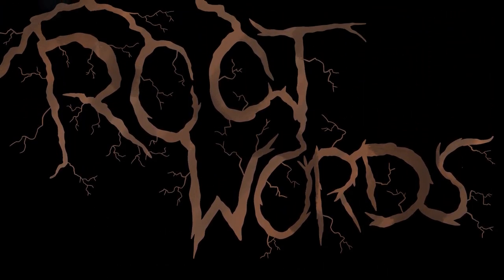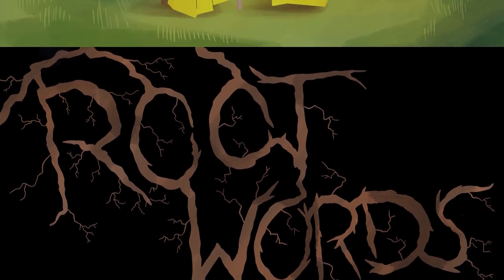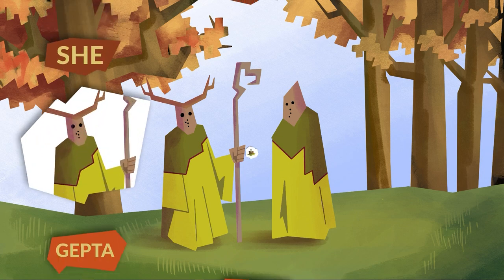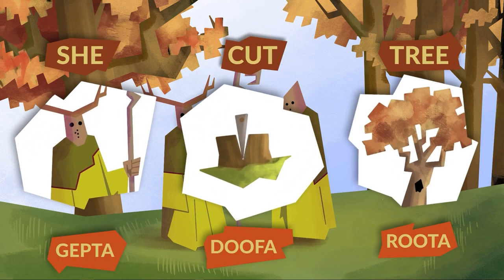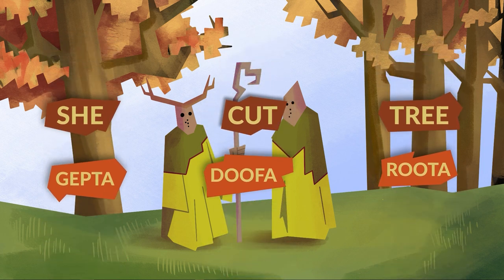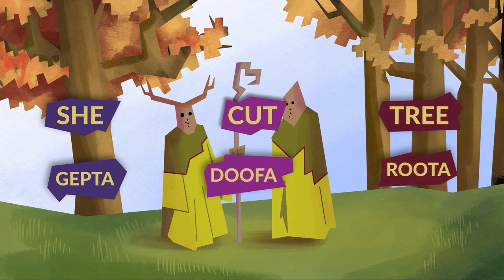Once you have your sounds, it's time to create a few root words. Exactly what they mean will be dependent on the people's culture. For example, a forest-dwelling people might have words like 'she,' 'cut,' and 'tree.' This is as easy as assembling sounds in an order you like. Just make sure you have a healthy mix of nouns and verbs — can't forget those verbs, since all those nouns need something to do. You'll need enough words to complete a simple sentence like 'she cut trees,' which contains a subject, verb, and object.